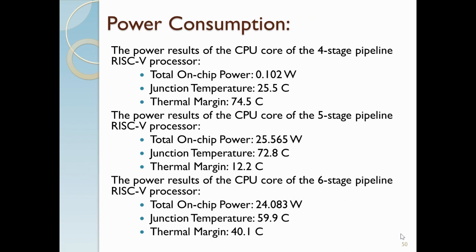Our power consumption results are as follows: for the four-stage, total power is 2.102 watts, junction temperature is 25.5°C, and thermal margin is 74.53°C. For the five-stage, total power is 25.565 watts, junction temperature is 72.8°C, and thermal margin is 12.2°C. For the six-stage, total power is 24.083 watts, junction temperature is 59.90°C, and thermal margin is 4.0°C.